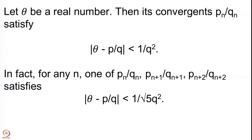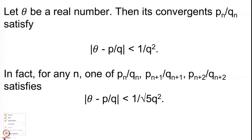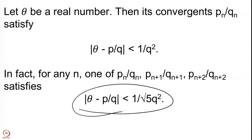We also saw that whenever you have any consecutive triple of convergents P_n/Q_n, P_{n+1}/Q_{n+1}, and P_{n+2}/Q_{n+2}, then one of these three should satisfy the improved inequality |theta − P/Q| < 1/(√5 · Q²). In fact, one of any two consecutive convergents satisfies |theta − P/Q| < 1/(2Q²).